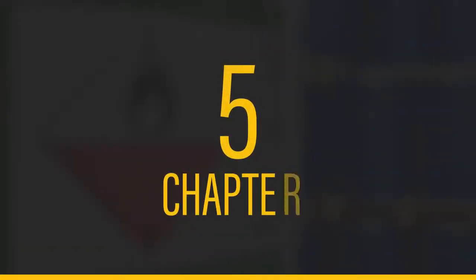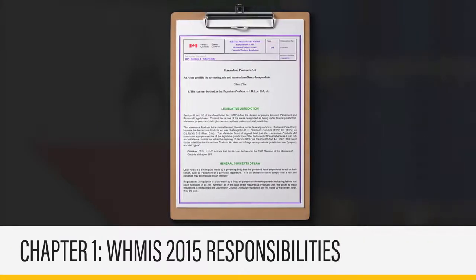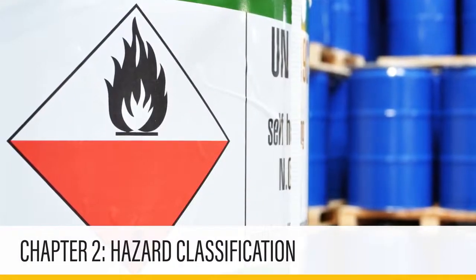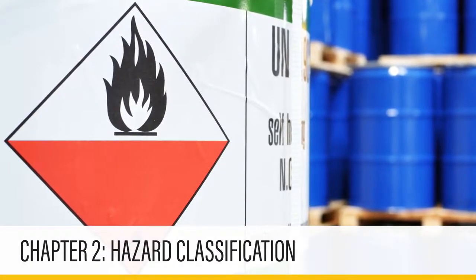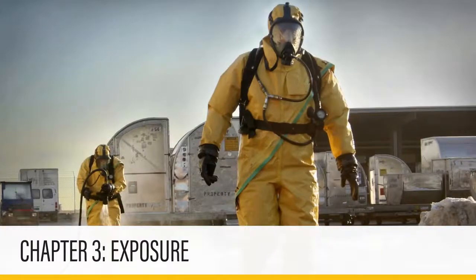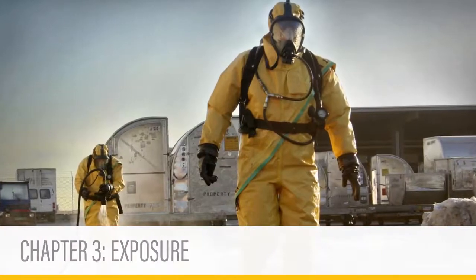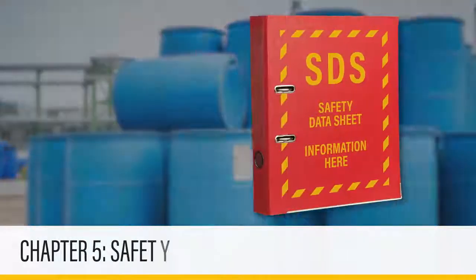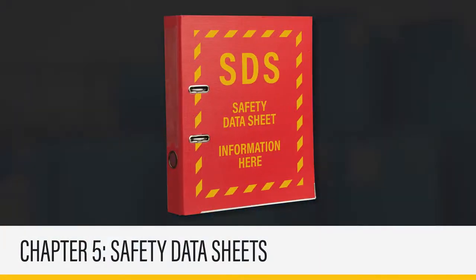Information in this course will be represented in five chapters. Chapter 1, WHMIS 2015 responsibilities. Chapter 2, hazard classification. Chapter 3, exposure. Chapter 4, labels. And Chapter 5, safety data sheets. Let's begin.